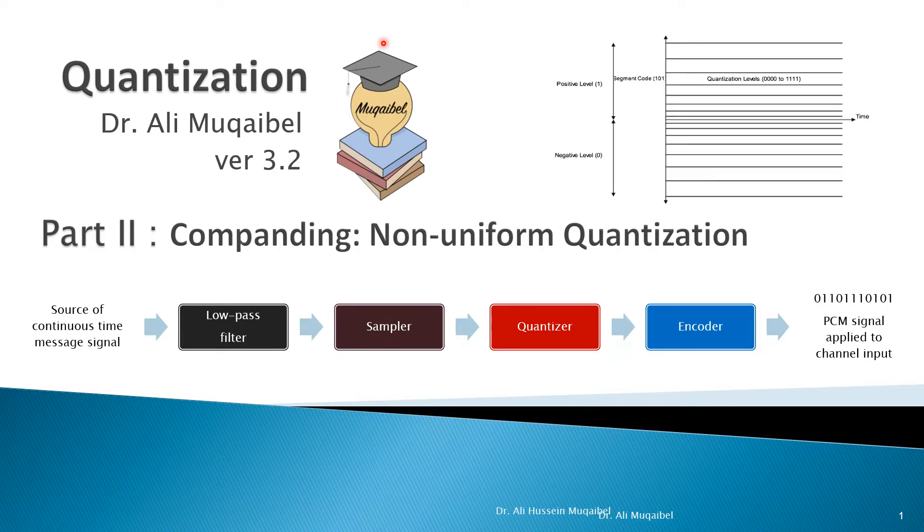In a non-uniform quantizer, as you can see here in the diagram, the levels on the y-axis are not uniformly spaced. This is called non-uniform quantization. So let's see how it works and what's the advantage for doing non-uniform quantization.